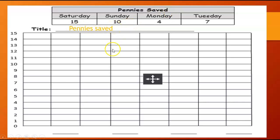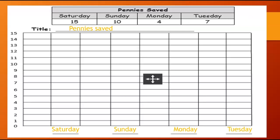Then we need to do our categories. How many categories do we have? One, two, three, four categories. They are Saturday, Sunday, Monday, Tuesday. So let's put Saturday down, Sunday, Monday, and Tuesday.